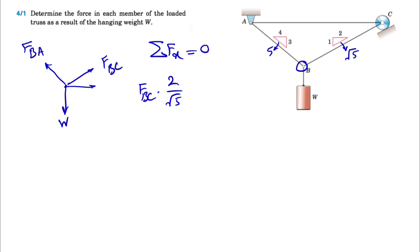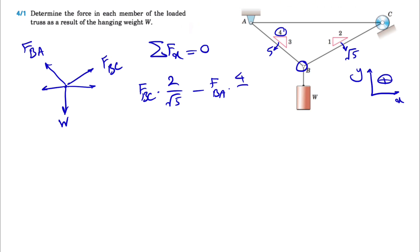We have positive FBC times 2 over √5, and then for FBA, the X component points to the left, so minus FBA times 4 over 5 equals zero. From this equation, we can find the relationship between FBC and FBA.